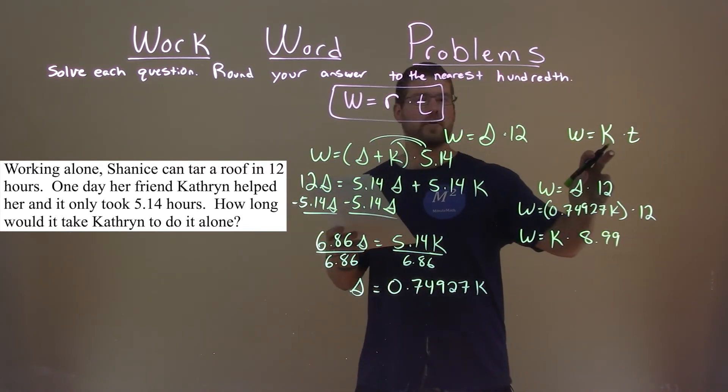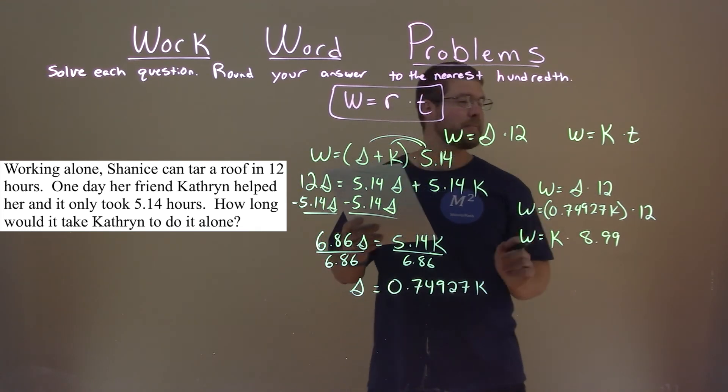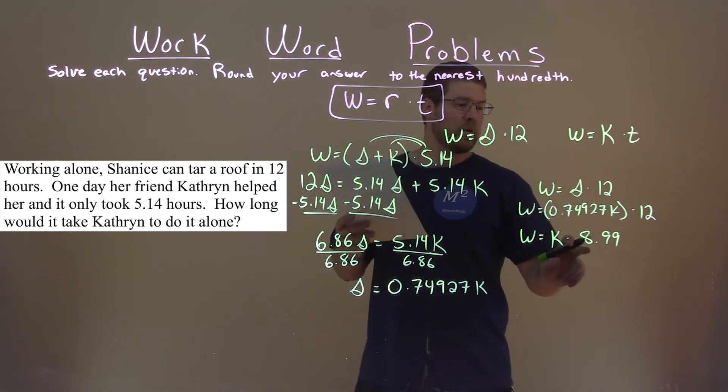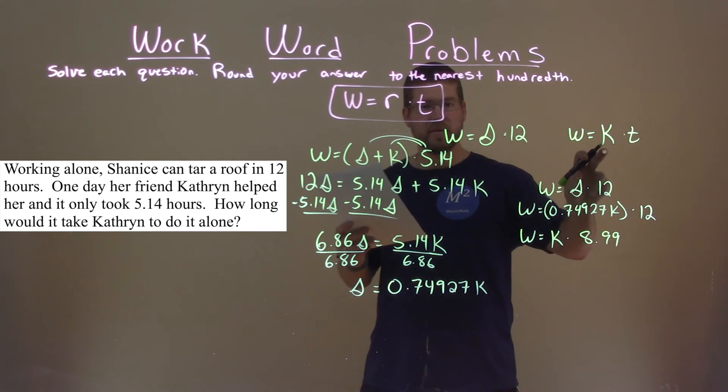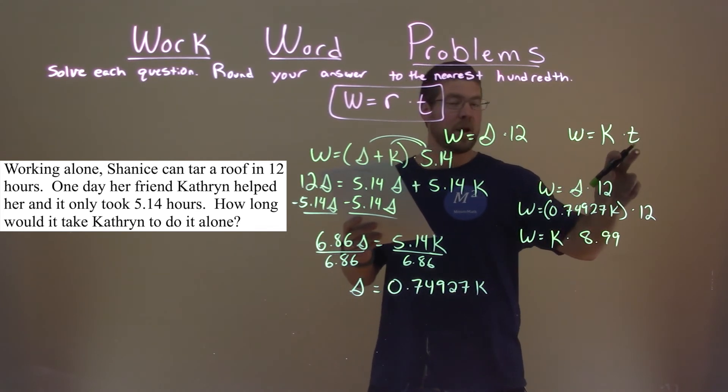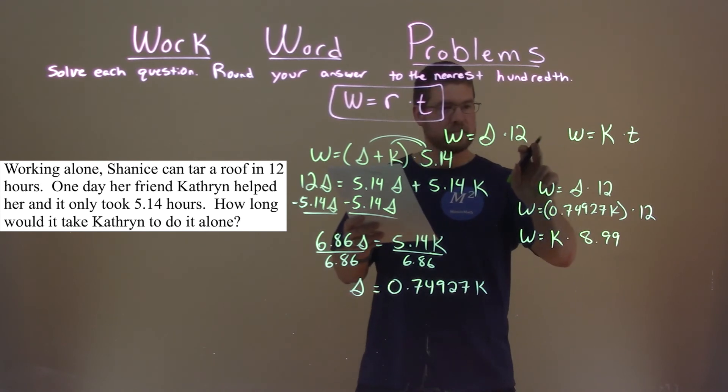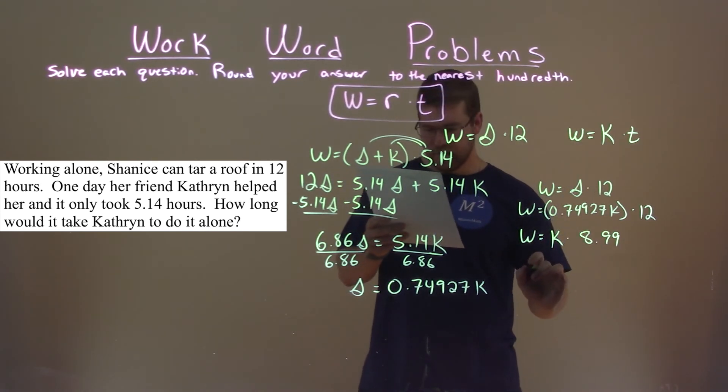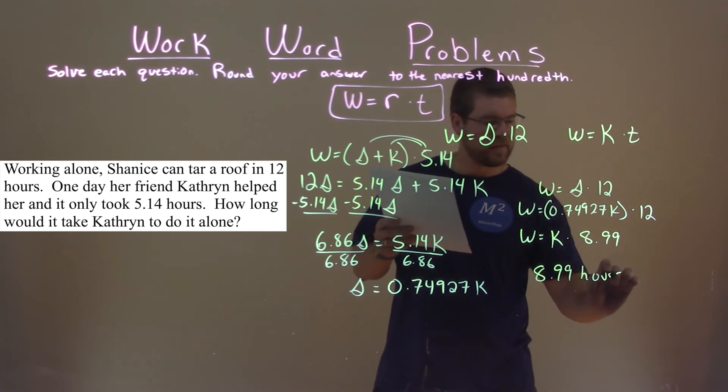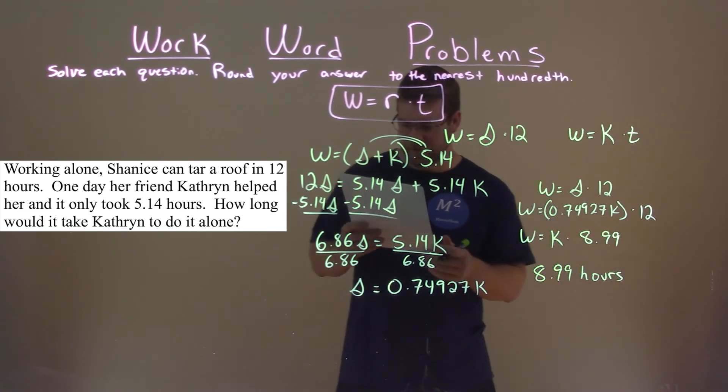And so, if we look at the formula for Catherine, we can see that whatever her work rate is, it takes her 8.99 hours to complete the job. So, our answer is 8.99 hours. And that's how long it would take Catherine to do it alone.